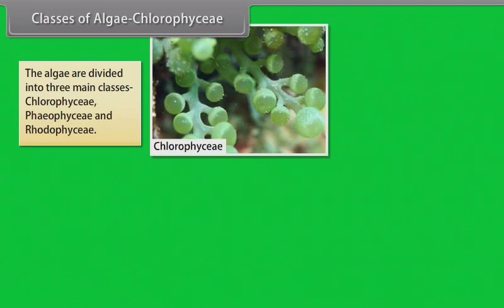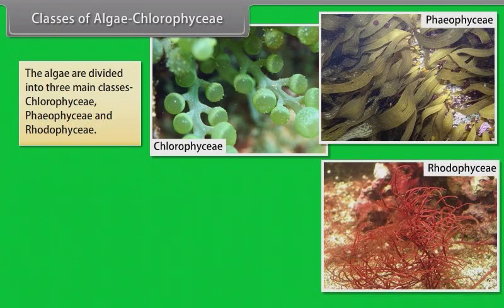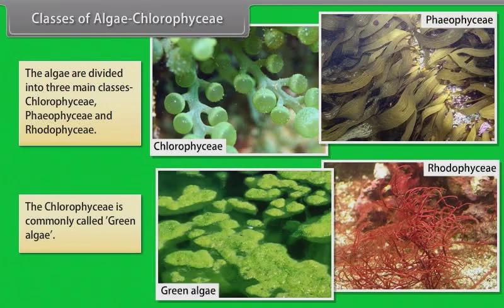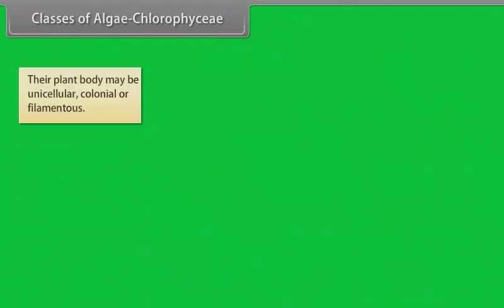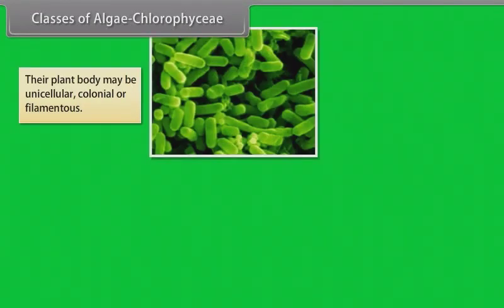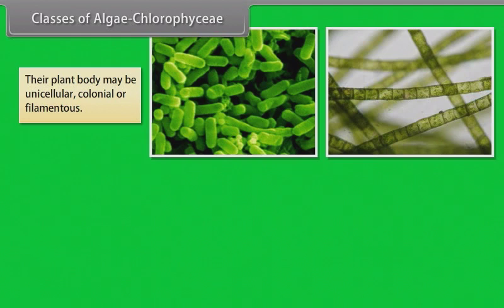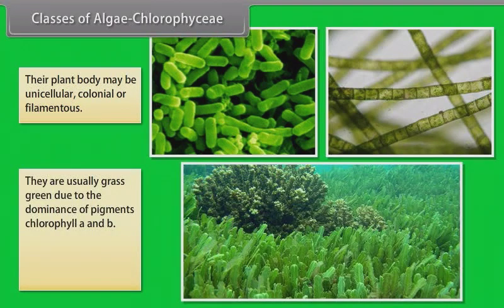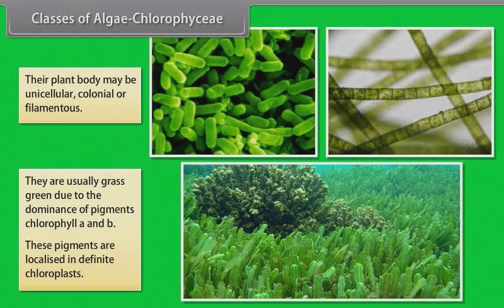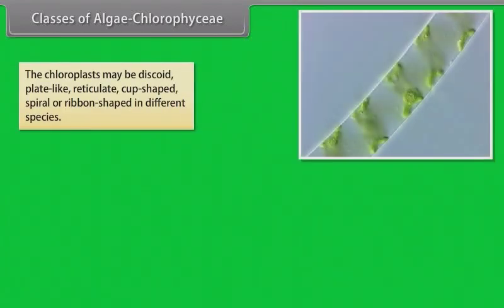The algae are divided into three main classes: Chlorophyceae, Phaeophyceae and Rhodophyceae. The chlorophyceae is commonly called green algae. Their plant body may be unicellular, colonial or filamentous. They are usually grass green due to the dominance of pigments chlorophyll a and b. These pigments are localized in definite chloroplasts. The chloroplasts may be discoid, plate-like, reticulate, cup-shaped, spiral or ribbon-shaped in different species.